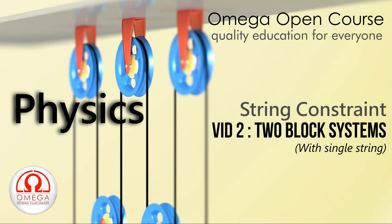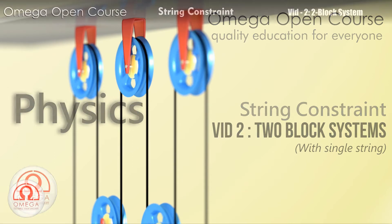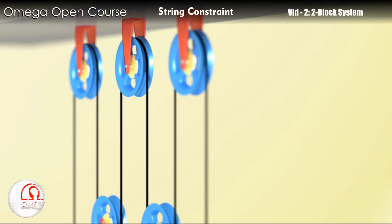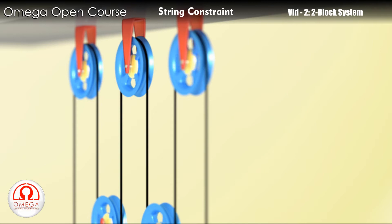Welcome to Omega Open Course. In the first video of this series we described what motion constraint is. We also saw that the constraint in motion due to strings is called string constraint. In order to find the relation between the motion of two blocks connected together using a network of pulleys and strings, you need to understand one basic idea.